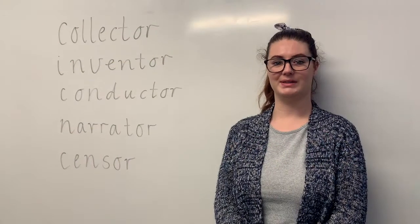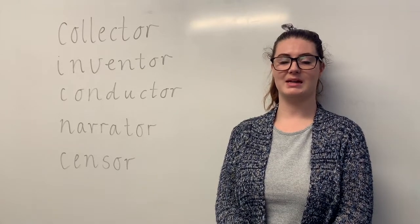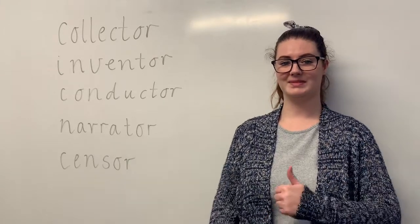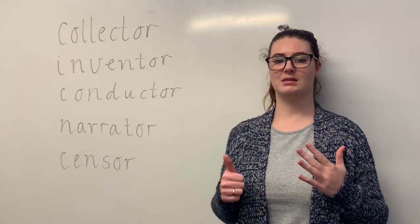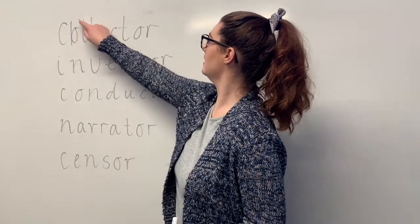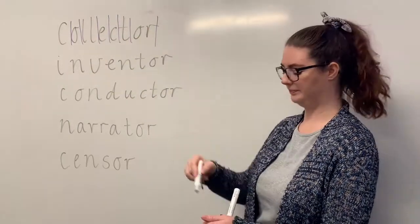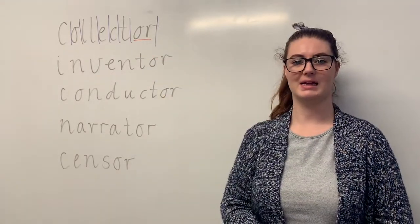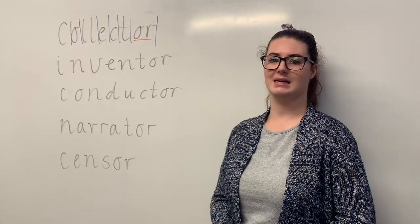These are our green words. Say collector. There are different types of collectors and some could be an art collector. The sounds in collector are together: C-O-L-E-C-T-O-R. The letters in collector are C-O-L-L-E-C-T-O-R. The part we need to remember is the OR digraph making the schwa sound. Collector. C-O-L-L-E-C-T-O-R.